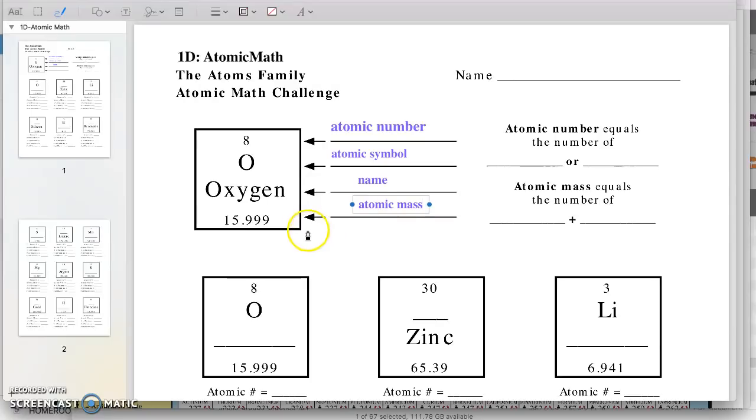Down here we have the element's name pointing to oxygen. And then this number at the bottom is called the atomic mass. Now what that means is that one single atom of oxygen is going to weigh 16 atomic mass units. So one atom of oxygen weighs 16 atomic mass units. So we can round this number down here to the nearest whole number. So don't worry too much about those digits right here after the decimal. So the atomic number, this number up here, tells us a few things.